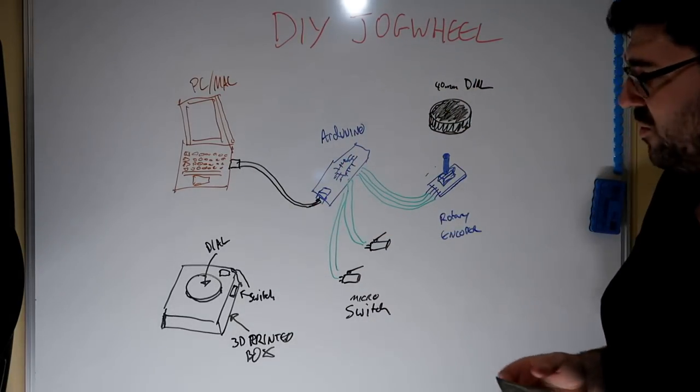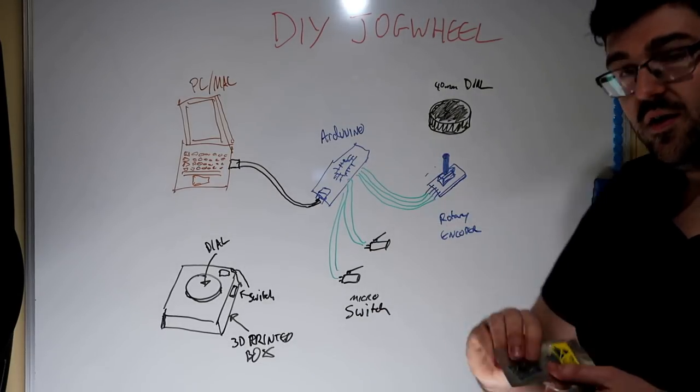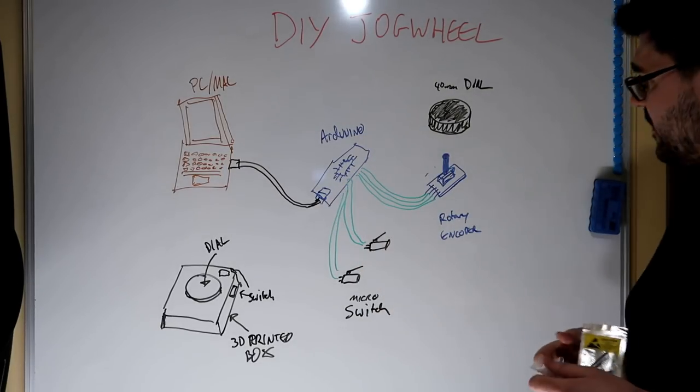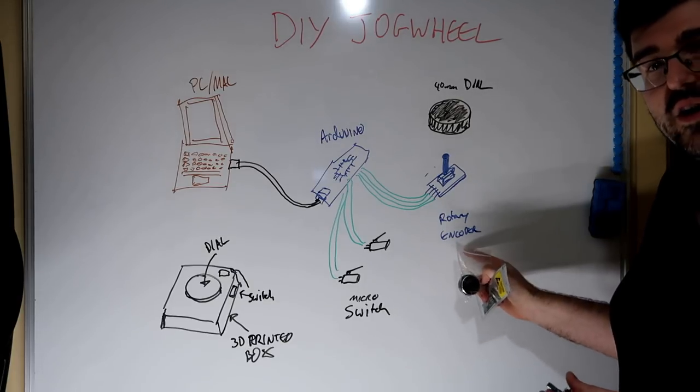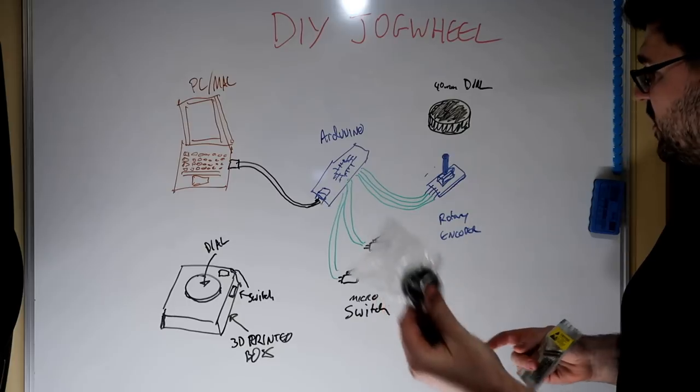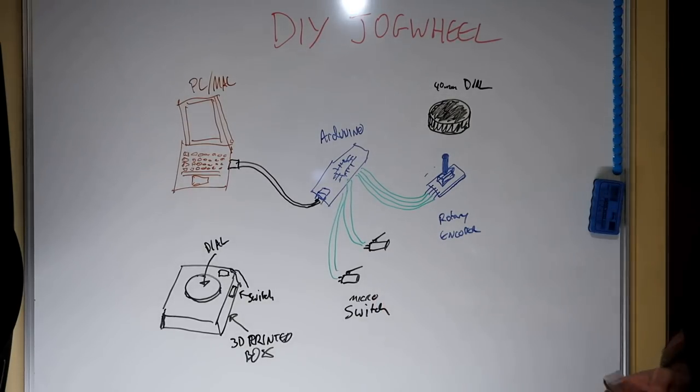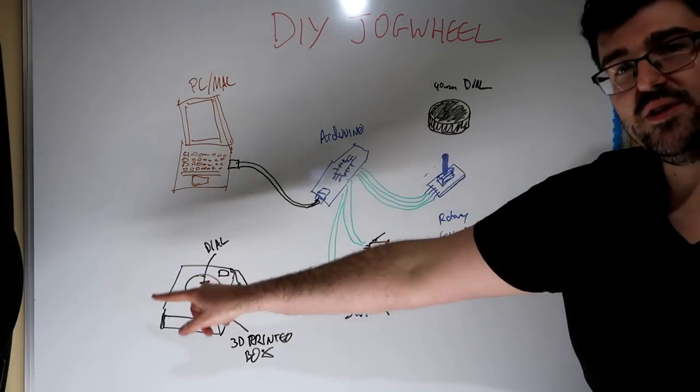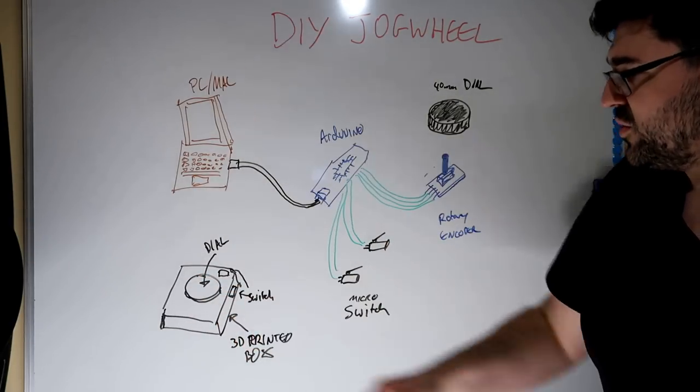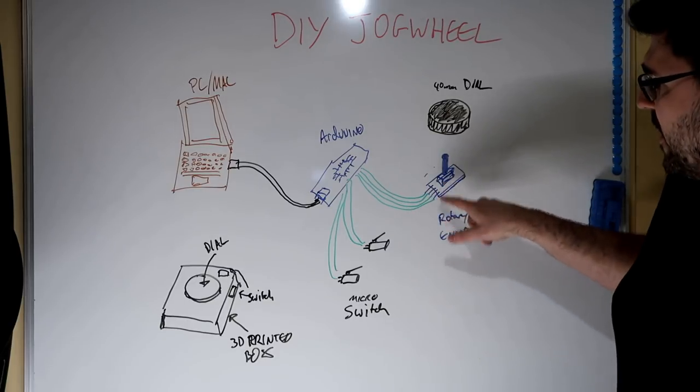Now what I'm going to do is use an Arduino controller which I've got here. I've got a rotary encoder, this little piece here, a dial for the top, and I've got a few micro switches hidden away in the back somewhere. Now I'm going to 3D print up a nice little box here which I'm going to mount all this equipment in.